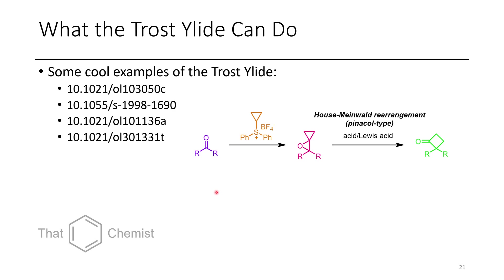What can you do with the Trost ylid? Instead of just getting an epoxide, you get an epoxide with a cyclopropane, which can then undergo a Meinwald rearrangement — a pinacol-type rearrangement of epoxides forming ketones or aldehydes in the presence of an acid or Lewis acid. Because these are so strained, this can typically be accomplished using only lithium as a Lewis acid.